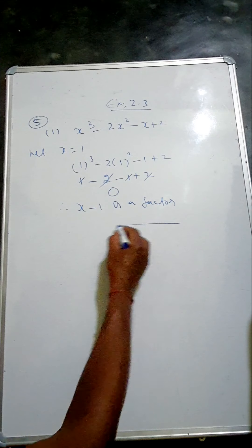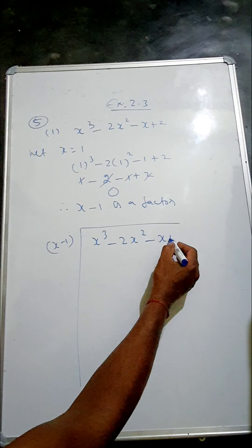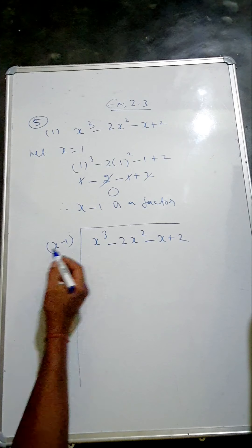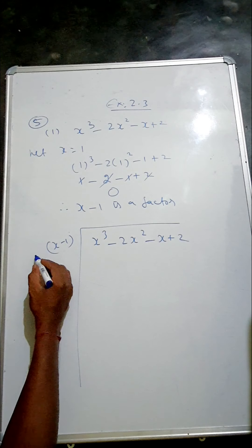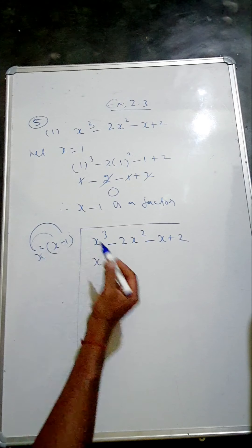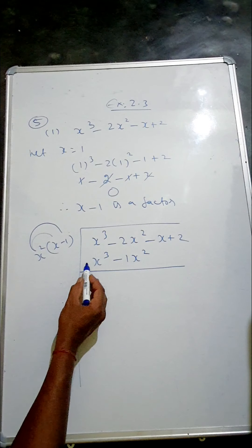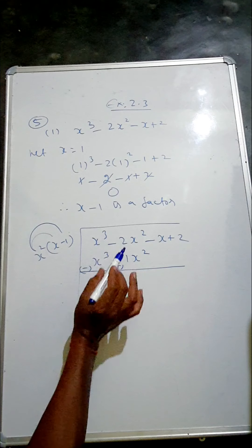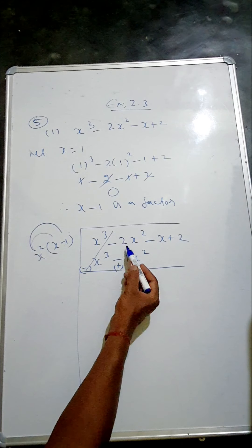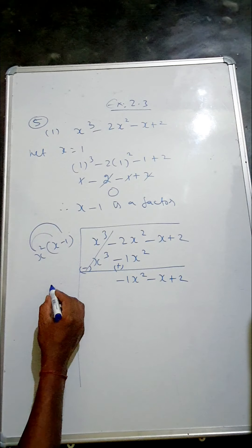We'll divide. We write x minus 1 here and the polynomial x cubed minus 2x squared minus x plus 2 here. Now, x into x squared gives x cubed. So we multiply by x squared. x squared into x is x cubed, and x squared into minus 1 is minus x squared. Now we change the sign: plus becomes minus, minus becomes plus, and these terms cancel. Minus 2 plus 1 gives minus 1. Bring down the same part.